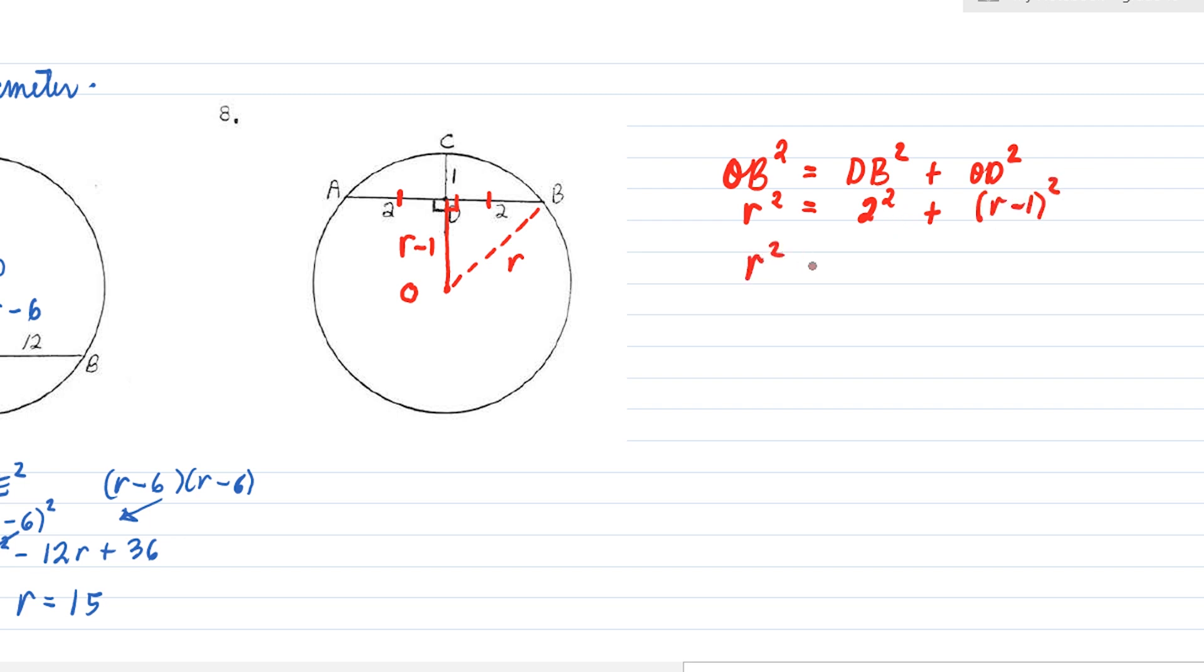So this is R squared equals 2 squared is 4 plus, let's expand this like what we did on the other part. We have R squared minus 2R plus 1. Both sides have R squared so we can cancel those things.